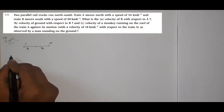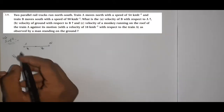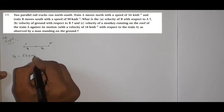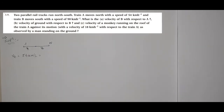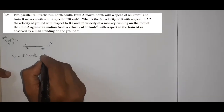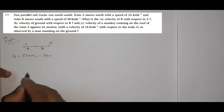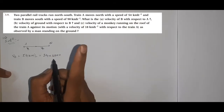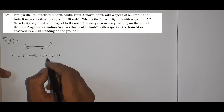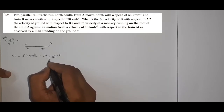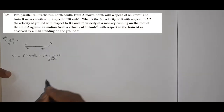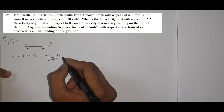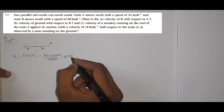We write vA equal to the velocity given, which is 54 km/h. We convert to meter per second: multiply by 1000 (one kilometer = 1000 meters) and divide by 3600 (one hour = 3600 seconds). Cancel out — the answer is 15 meter per second.